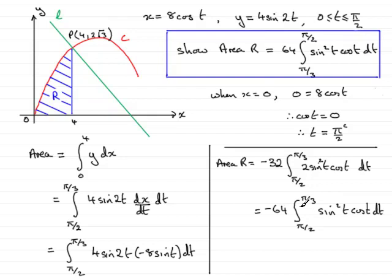Well, what you can do is a well-known fact that if you switch limits, then you change the sign of your integral. So this is exactly the same then as 64 times the integral from π/3 to π/2 sin² t cos t dt. And that's what we had to show. And so hopefully you've been able to follow that. And that brings us nicely to the end of this part of the question.